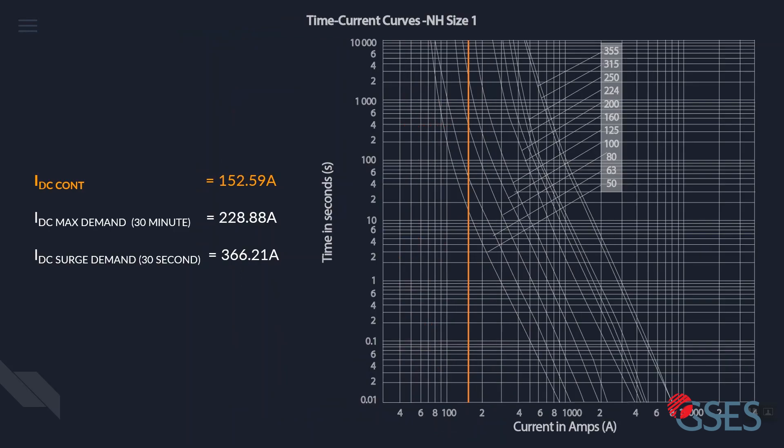Using the discharge currents we calculated earlier, mark the point where the continuous current, 152 amps, intersects with the maximum time, in this case 10,000 seconds. This will be a vertical straight line.